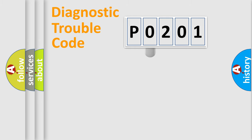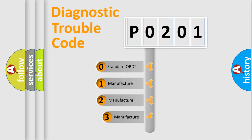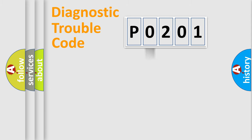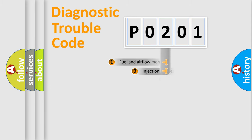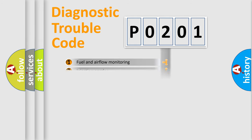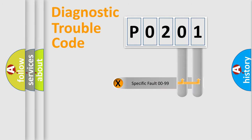This distribution is defined in the first character of the code. If the second character is expressed as zero, it is a standardized error. In the case of numbers 1, 2, or 3, it is a more specific expression of a car-specific error. The third character specifies a subset of errors. This distribution is valid only for the standardized DTC code.